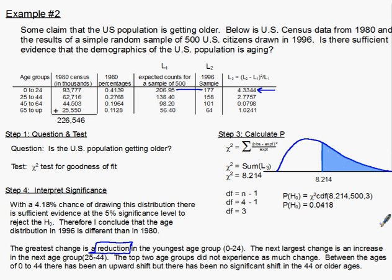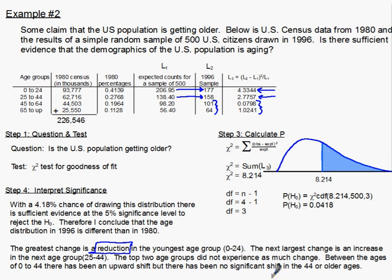The next largest change is an increase in the next age group — that's the second biggest component of chi-squared. By looking at the counts we can see the direction. The top two age groups have fairly small chi-squared components, so there was not much change there. Between the ages of zero and 44 there has been an upward shift, but there has been no significant shift in the 44-or-older age groups. So we get an interpretation of magnitude and direction that the basic chi-squared test can't give you — you have to look at the components and the counts.